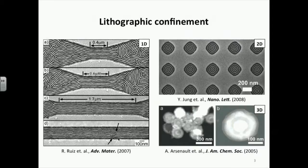One-dimensional confinement is used to achieve parallel lines, as we can see in the left SEM image. This is the most commonly used type of lithographic confinement. Two-dimensional confinement is used to achieve ring-shaped structures, shown in the top right SEM image. Finally, three-dimensional confinement is used to achieve concentric spheres, as shown in the bottom right TEM image.